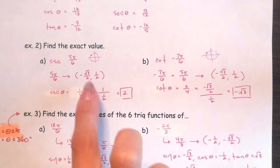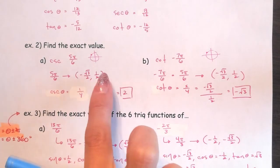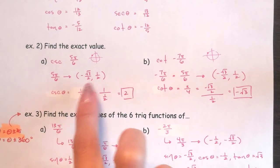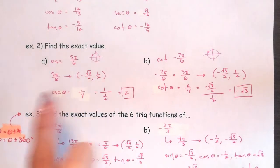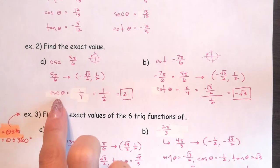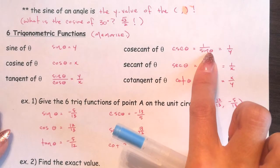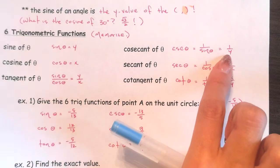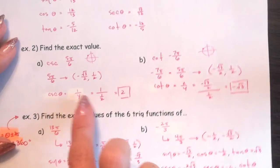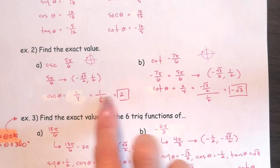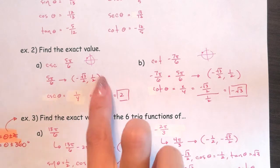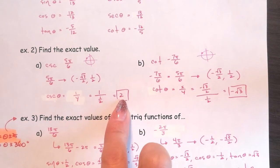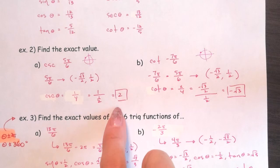I know it's in quadrant 2, so it's negative x and positive y — that's negative root 3 over 2, comma 1 over 2. I'm using my left-hand trick, not a unit circle. Cosecant is 1 over sine, which is 1 over y. So 1 over 1/2, and 1 divided by 1/2 is 1 times 2 over 1, which equals 2.